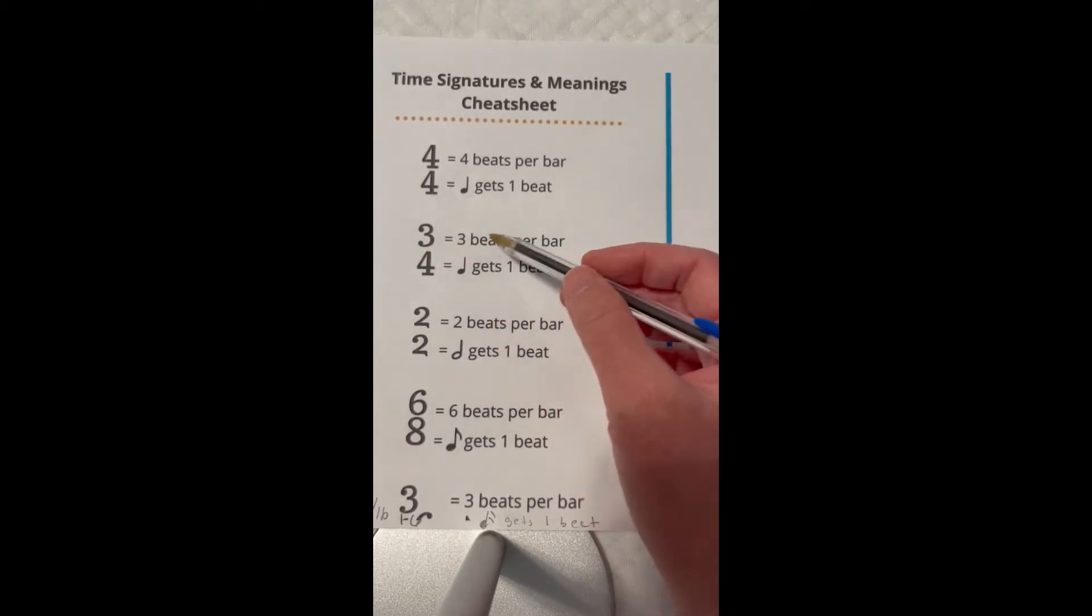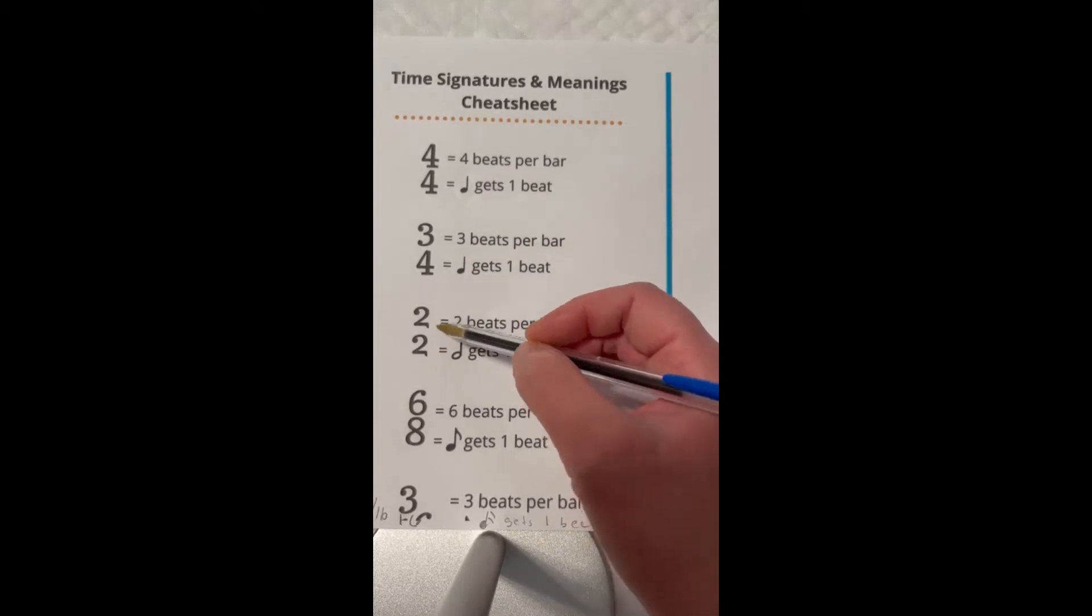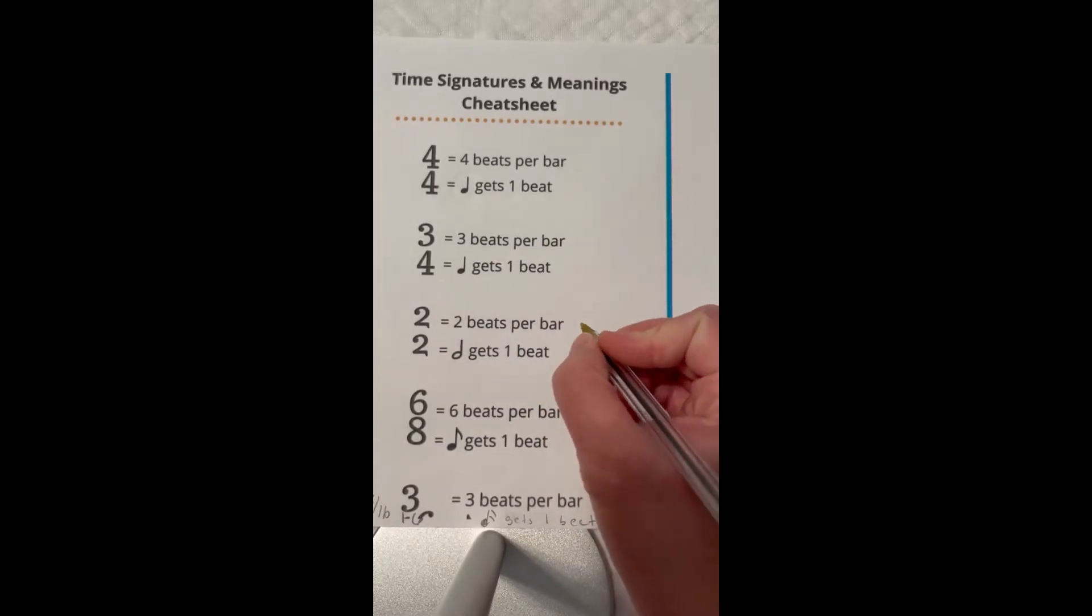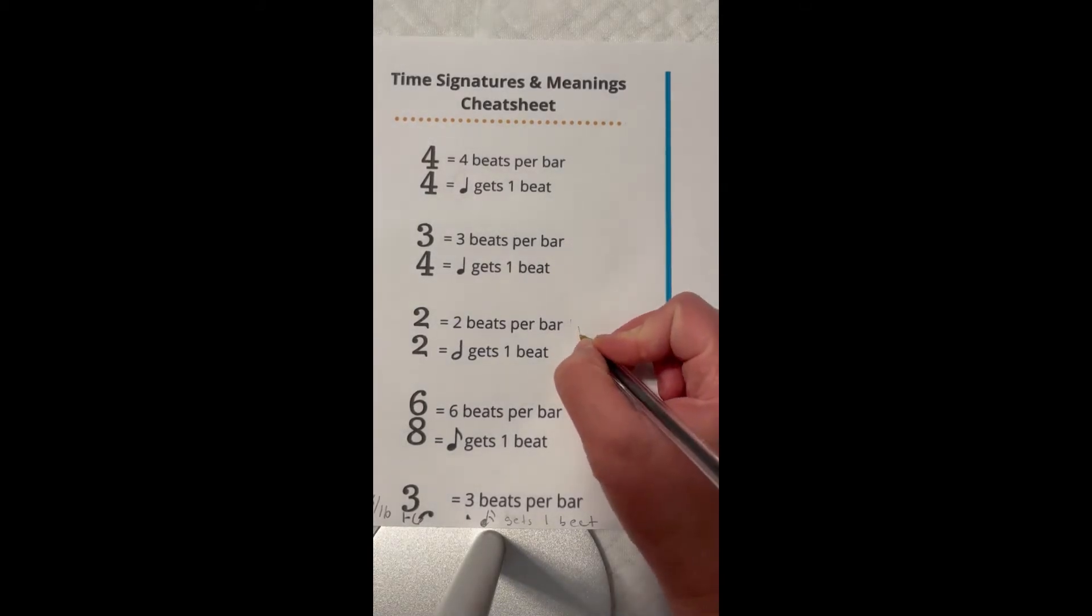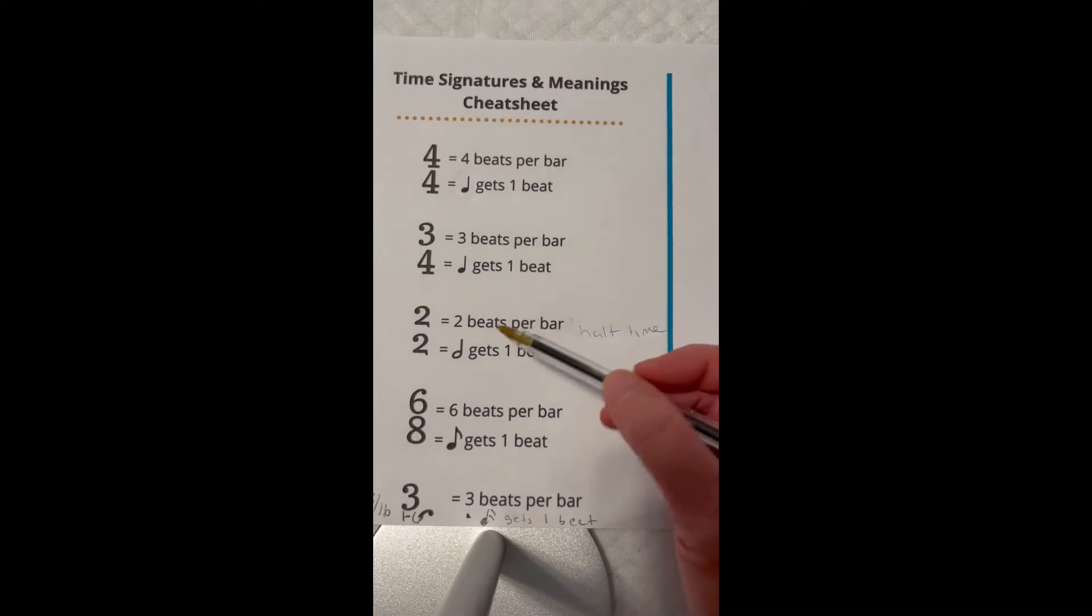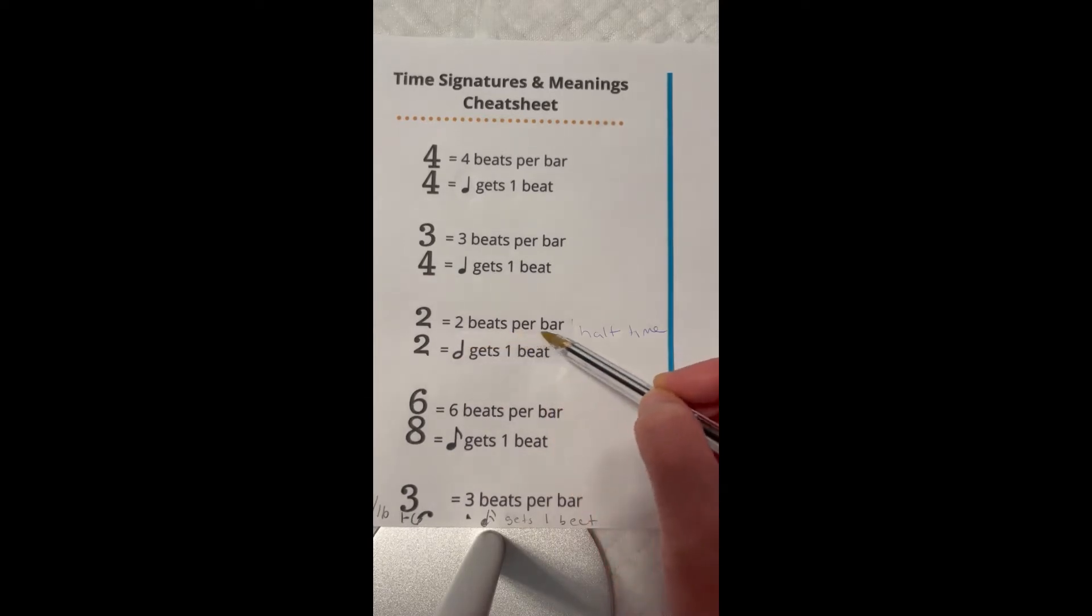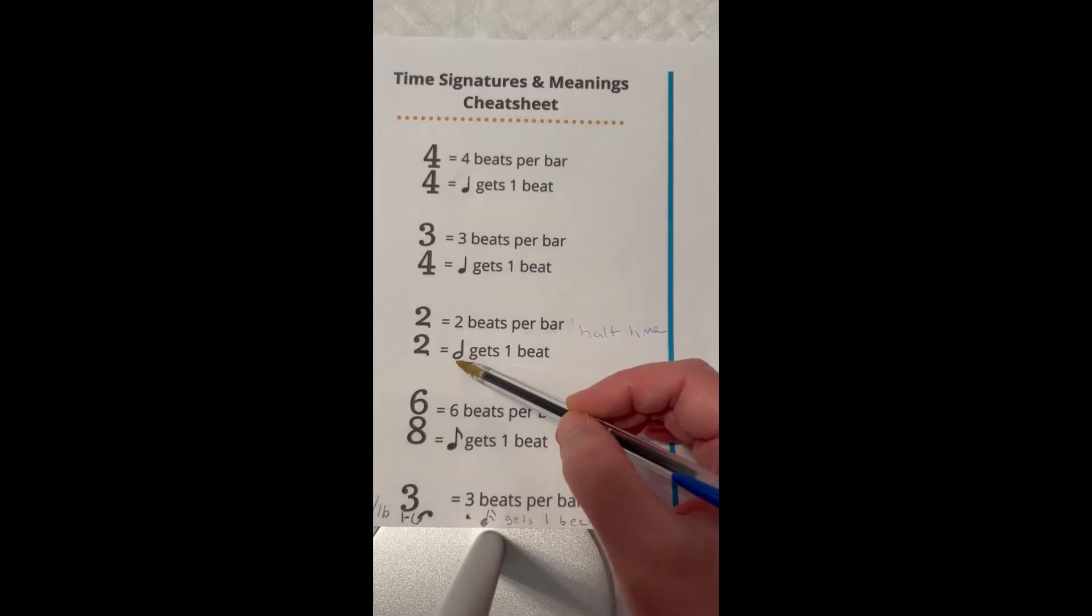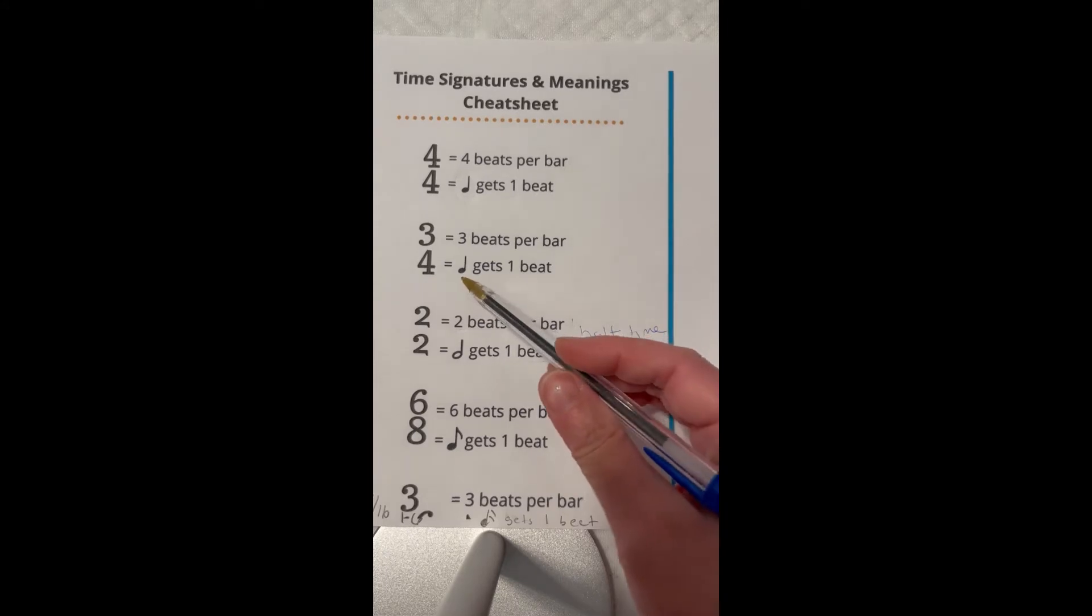There's two-two. This is half time. This can also be known as half time - that's what it's called. So anyway, this has two beats per bar, and here's the two. So a half note in this case would get one beat. Here we said a quarter note will get one beat if it's a four.